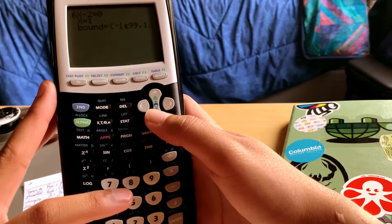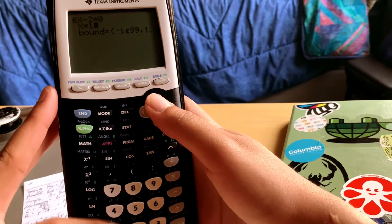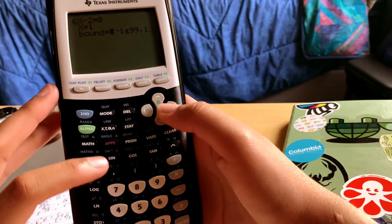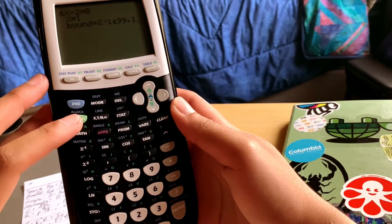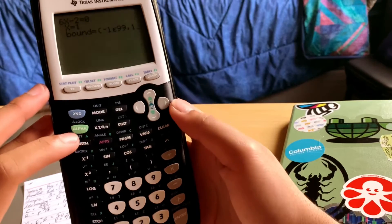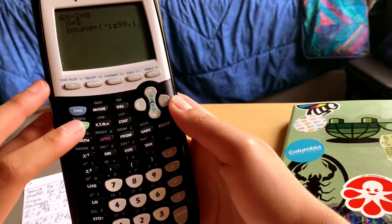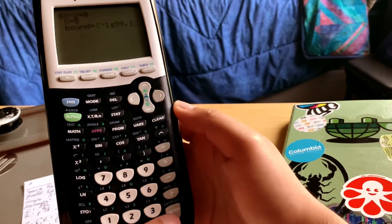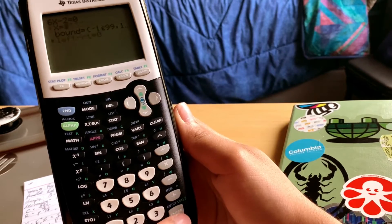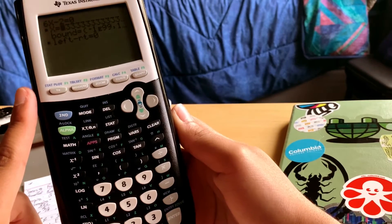Put in a guess for x. You can put a number like 1, just a number that isn't zero. Then go to alpha and hit enter, which is equivalent to hitting solve. And the calculator should solve for the unknown variable.